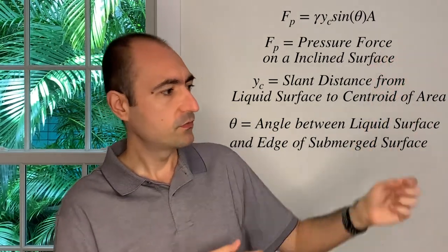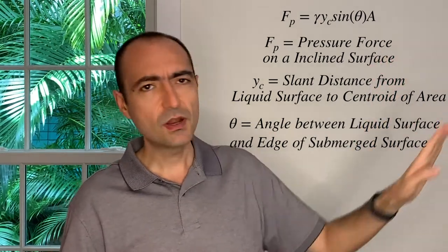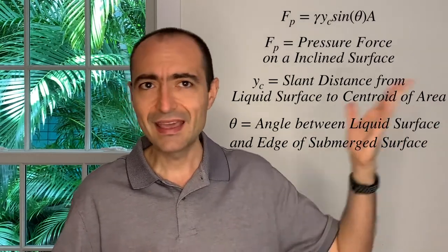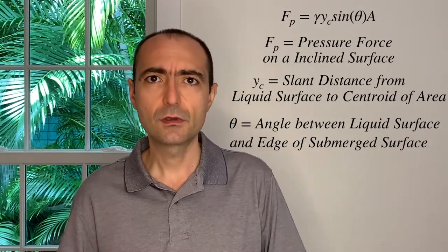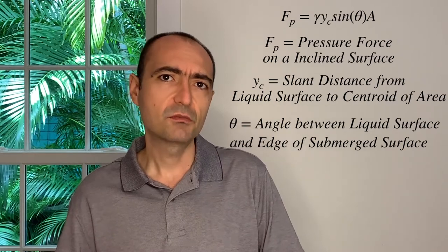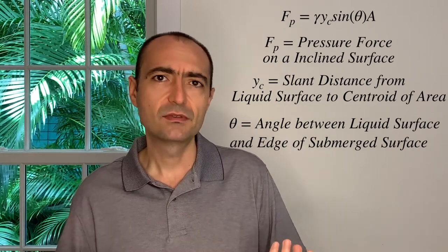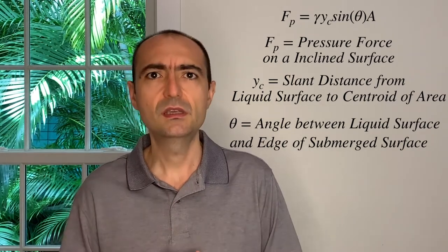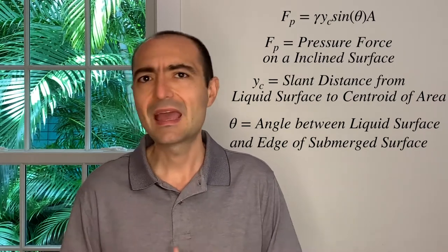The third configuration is an inclined surface. If y is the direction along the inclined surface and theta is the angle it makes, then h_c equals y_c times sine of theta, and the force formula becomes: specific weight times y_c times sine(theta) times area. These equations for the FE exam are available on page 179 of the reference manual.